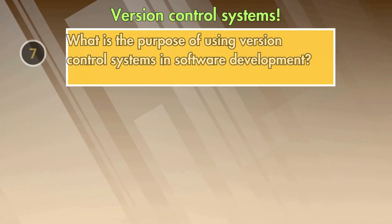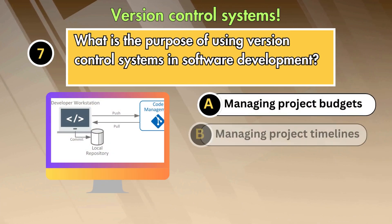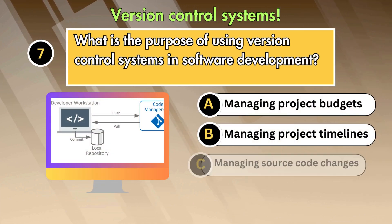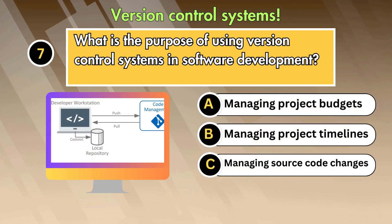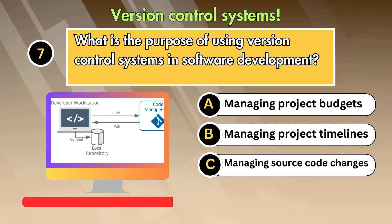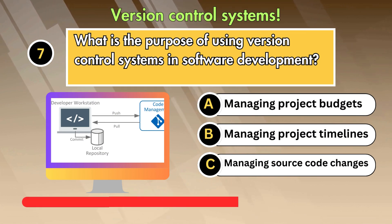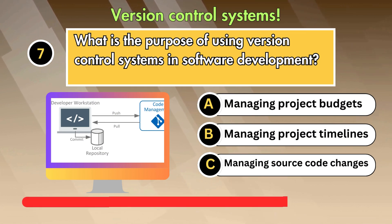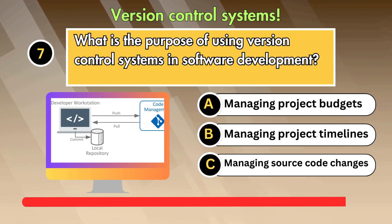Question 7: What is the purpose of using version control systems in software development? Option 1: Managing project budgets. Option 2: Managing project timelines. Option 3: Managing source code changes.